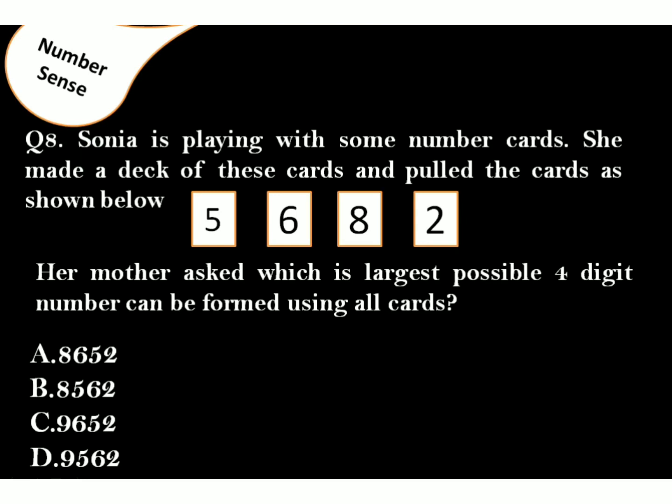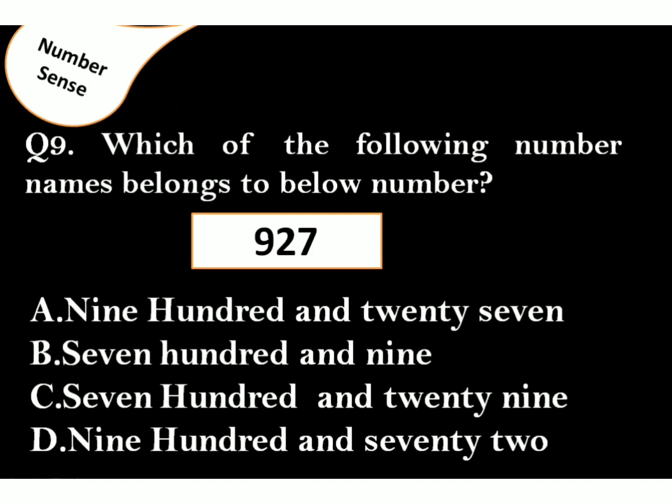Question 8. Sonia is playing with some number cards. She made a deck of these cards and pulled the cards as shown below. Her mother asked her which is the largest possible 4-digit number can be found using all cards? Answer is Option A. Here, you have to arrange these numbers in descending order.